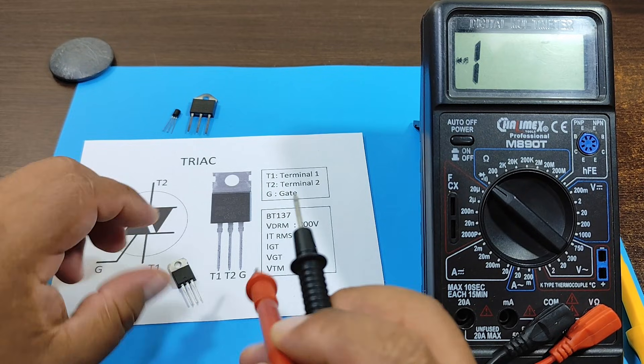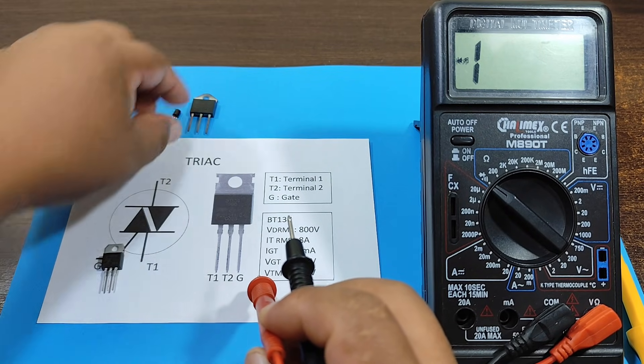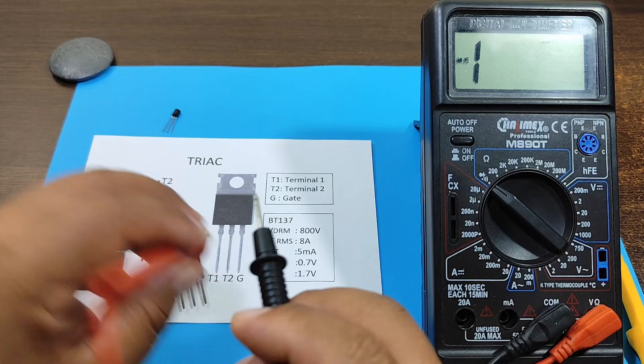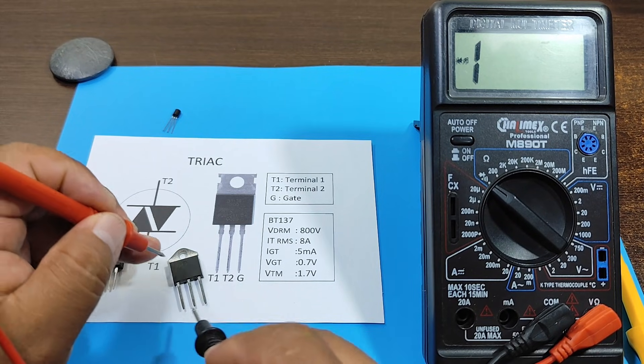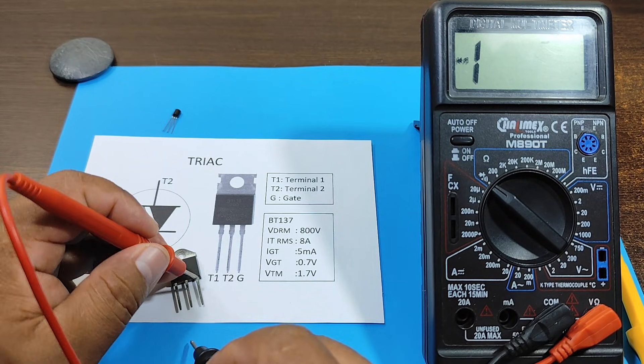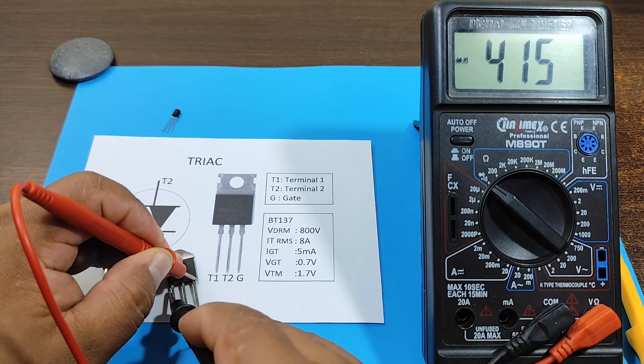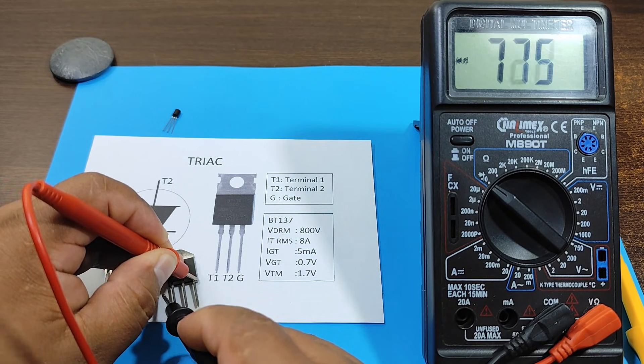Keep in mind that the reading depends a lot on the triac being used. So that you have a reference value, we'll use this triac, which is of higher power. And that way, we'll see the difference between two triacs. It's a much smaller value.